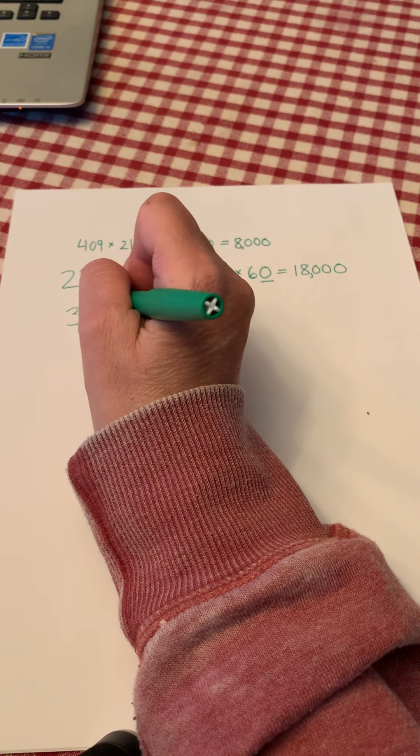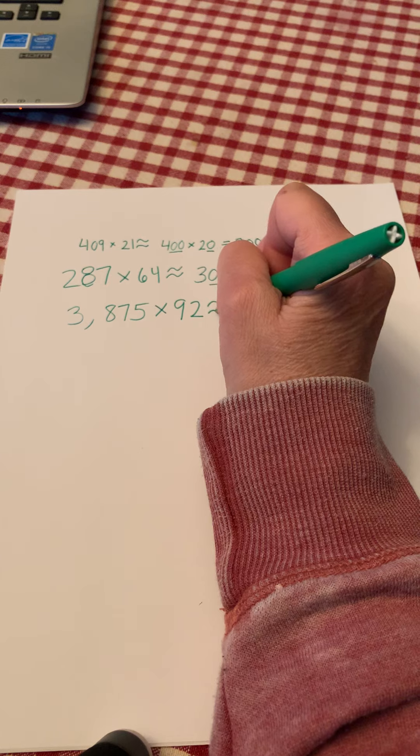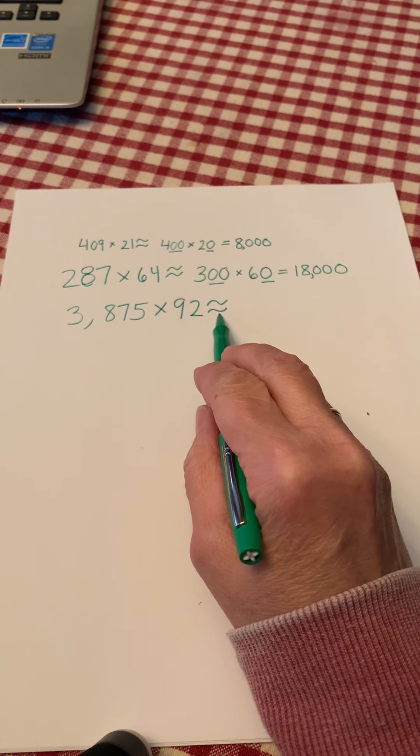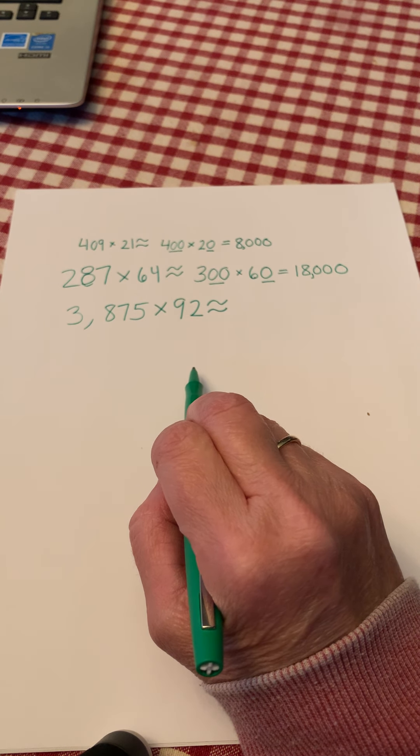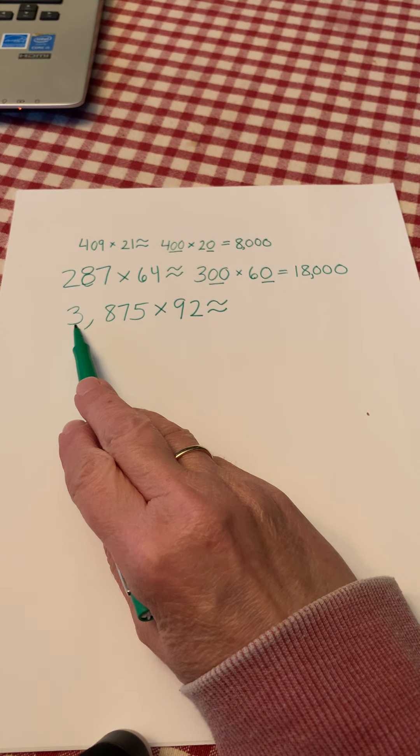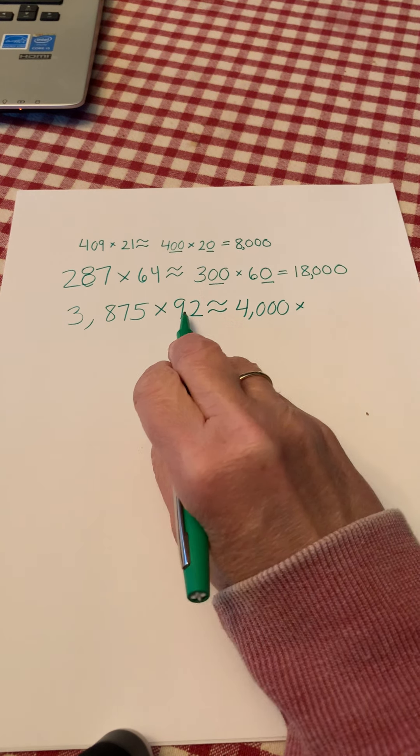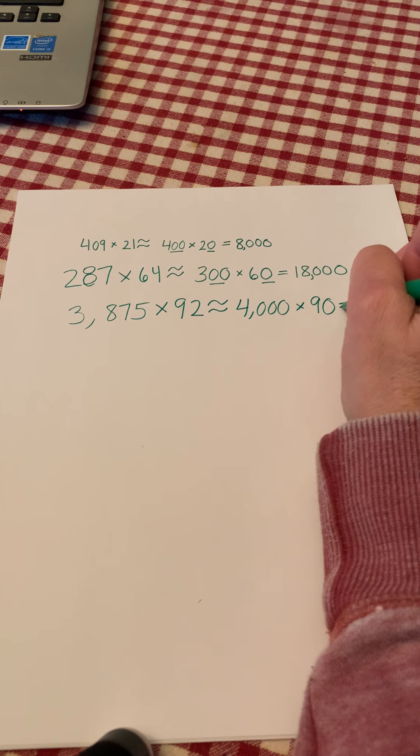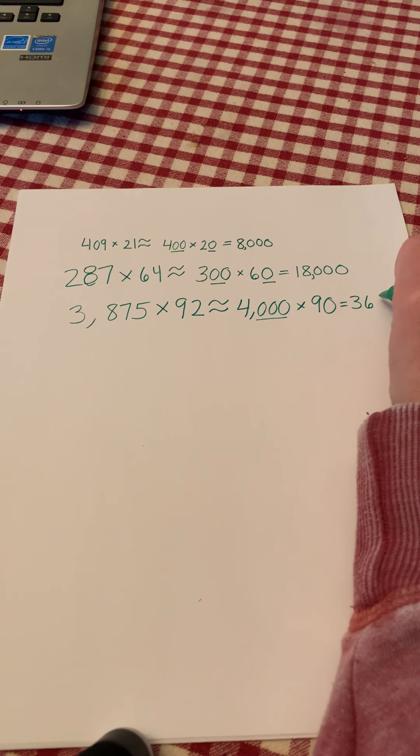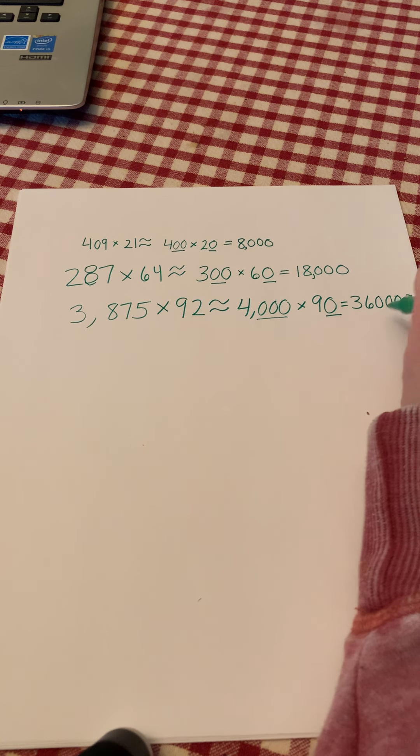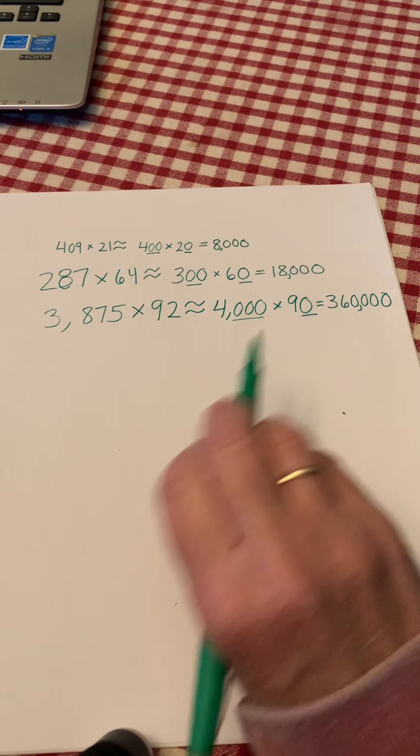Okay, you try another one. 3,875 times 92. Press pause, solve this problem, rounding the factors and multiplying and see what you come up with, then press play to check your answer. Okay, for this one I rounded 3,875 to 4,000. I rounded 92 to 90, then I multiplied. 4 times 9 is 36 times a thousand times 10 is 360,000. Did you get that answer? If you did, that's great.